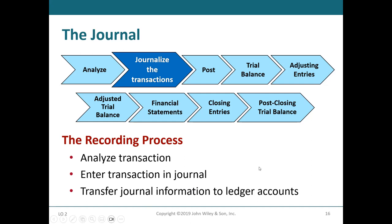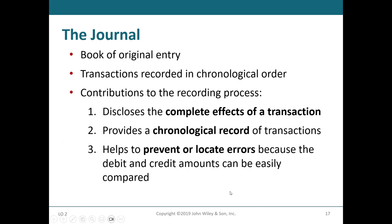The next step is to enter the transaction in the journal and then transfer the journal information to the ledger accounts. So we analyze the transaction, record it in the journal, and then transfer the journal information to the ledger accounts. Now let's talk about the journal. A journal is like a book in the company that keeps track of all the transactions — all the business transactions. We call it a book of original entry; it's like a diary of all the economic events of the company. The transactions are recorded in chronological order.